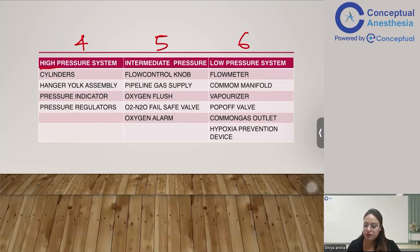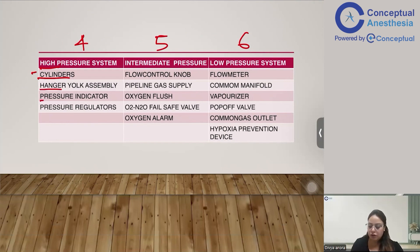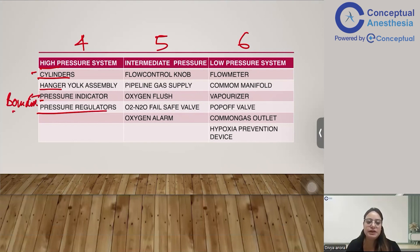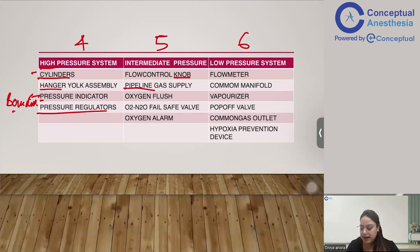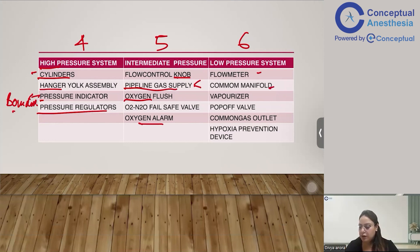The high pressure system includes: the cylinder, the hanger yoke assembly, the pressure indicator (also known as the Bourdon's pressure indicator), and the pressure regulator — because we cannot deliver 2000 psi directly to the patient. The intermediate pressure system consists of the flow control knob, pipeline gas supply, pressure regulators, oxygen flush, the oxygen-nitrous fail-safe valve, and the oxygen alarm. The low pressure system consists of the flow meter, common manifold, vaporizer, pop-off valve, common gas outlet, and the hypoxia prevention device.